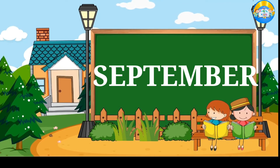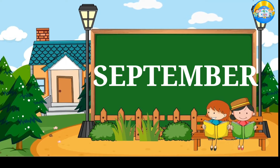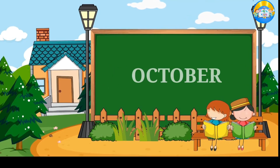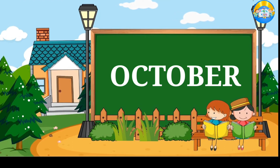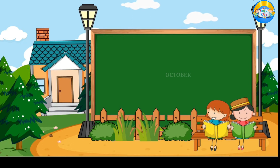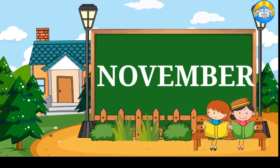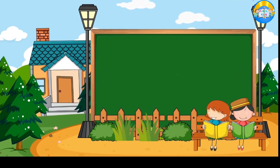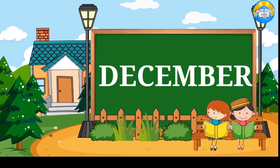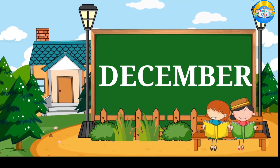September. September is the ninth month of the year. October. October is the tenth month of the year. November. November is the eleventh month of the year. December. December is the twelfth and last month of the year.